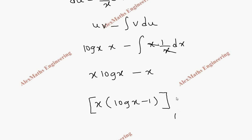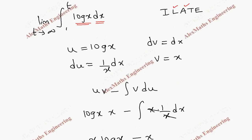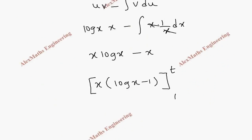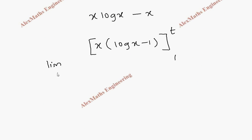So after integration we put the limit from 1 to t which is given in the question and limit t tends to infinity. When I put infinity, we get infinity times log infinity minus 1.